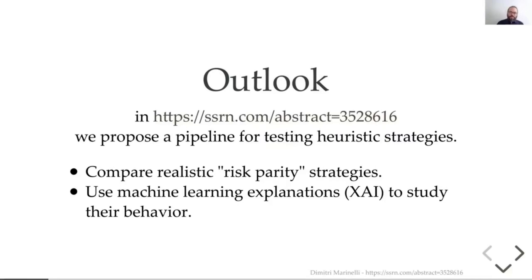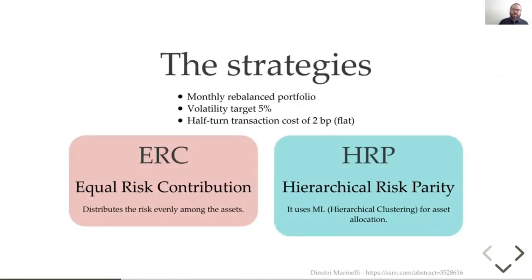In the paper, we proposed a pipeline for testing heuristic strategies that goes beyond the usual way of testing strategies in finance. In particular, we wanted to exploit machine learning explanations to better understand these strategies. The strategies we studied are risk-based strategies, and we focused on two: Equal Risk Contribution, a more traditional strategy that equally distributes risk among assets, and Hierarchical Risk Parity, a machine learning-based strategy using hierarchical clustering for asset allocation.